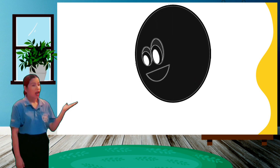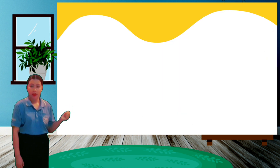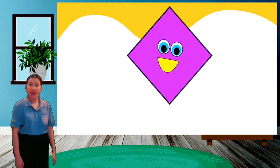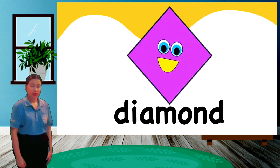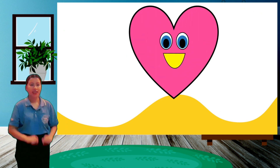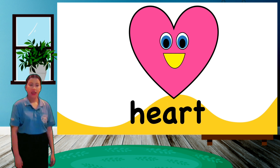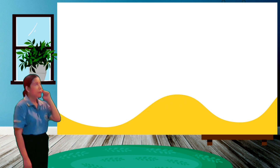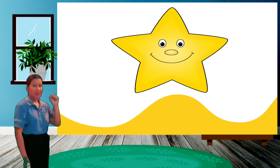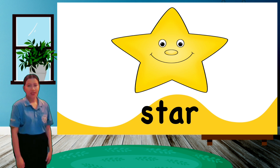Next, oval. Next is a diamond — a purple diamond. Please repeat after me: a pink diamond. A pink heart. Next, star — a yellow star. Please repeat after me: a yellow star.